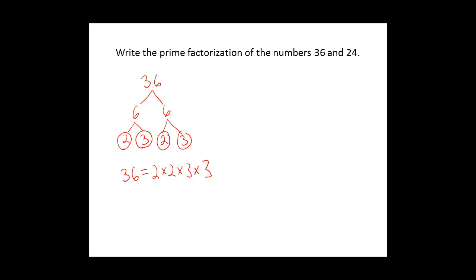We will do the same thing for the number 24. What two numbers multiply to give us 24? We can do this many ways, but let's do 3 and 8. 3 is a prime number, so we can circle it.